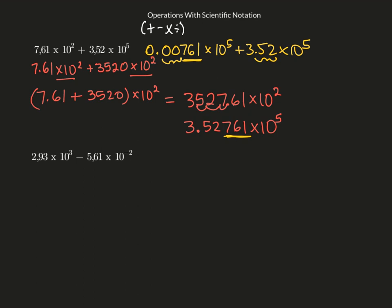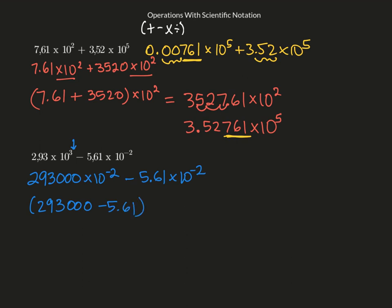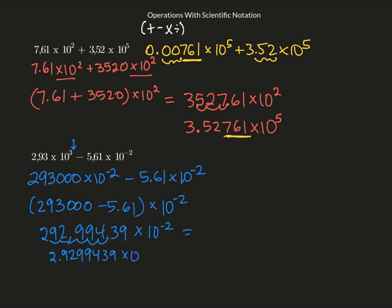If I'm going to change the bigger exponent to match the smaller one, I have to take five away from this exponent, moving the decimal one, two, three, four, five places. So now I'm going to be doing 293,000.00 minus 5.61, times 10 to the negative 2. I get 292,994.39 times 10 to the negative 2. To convert back to scientific notation, I move the decimal five places, giving 2.9299439 times 10 to the 5th.